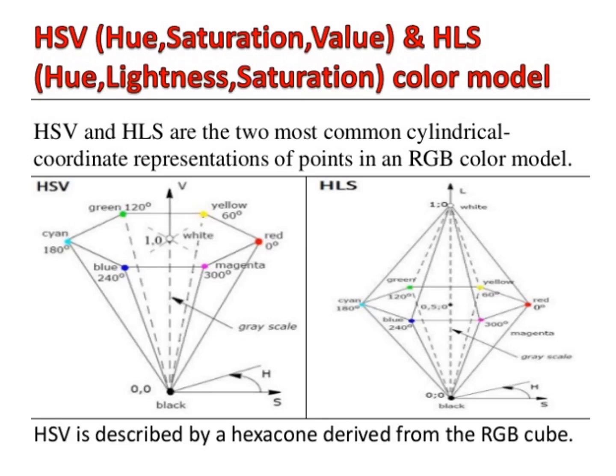As shown in the HSV figure, the top of the hexagon is derived from the RGB cube. If we imagine viewing the cube along the main diagonal from the white vertex to the origin (black), we see an outline of the cube that has a hexagon shape, as shown in the figure. This boundary of the cube is used as the top of the hexagon and represents hue H, which is measured by the angle around the vertical axis.